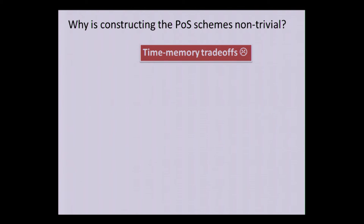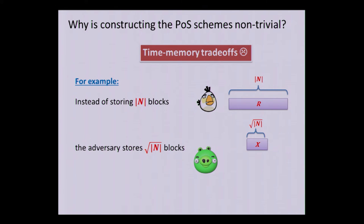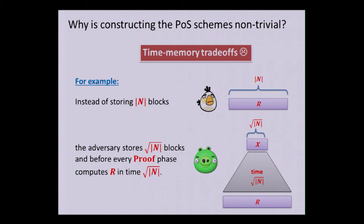So, now I have a few minutes to talk about our constructions. Why are the constructions non-trivial? Because of time-memory trade-offs. Well-known thing in cryptography. What happens when you start to analyze trivial solutions, like simple solutions for this problem, you will end up with solutions that can be broken with time-memory trade-offs. So, for example, the adversary, instead of storing N blocks, will store square root of N blocks, and he would run in time square root of N. These are time-space trade-offs, like baby step, giant step type of thing. So, for many easy ideas for solving this problem actually break here.